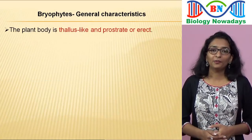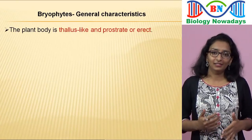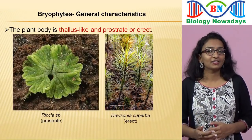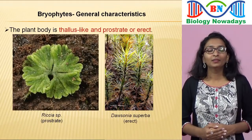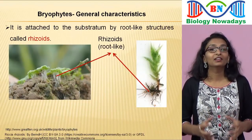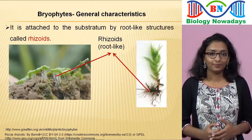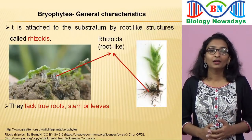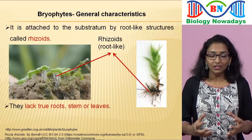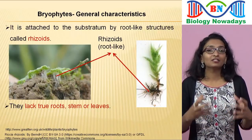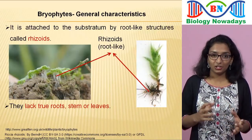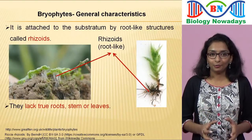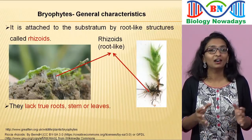The plant body of bryophytes is thallus-like but more differentiated than in algae. The thallus-like plant body may be prostrate, like Riccia, or erect, like Dawsonia superba. The plant body is attached to the substratum by root-like structures called rhizoids. Bryophytes don't have true roots, stem or leaves — meaning roots, stem and leaves with vascular tissues called xylem and phloem, which are specialized for water and food transport. Bryophytes don't have xylem and phloem, and that's what makes them different from other land plants.